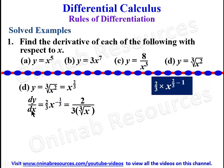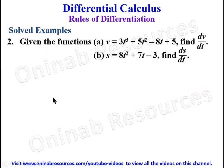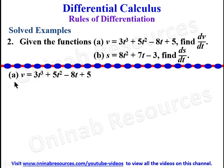We now go to problem 2. Given the functions: (a) v = 3t^3 + 5t^2 − 8t + 5, find dv/dt; and (b) s = 8t^2 + 7t − 3, find ds/dt. Starting from part (a).